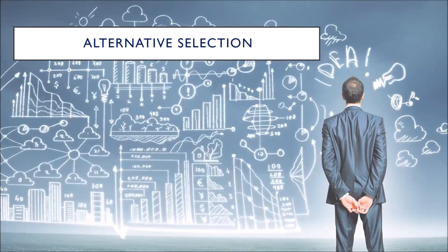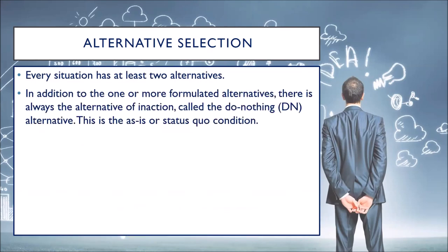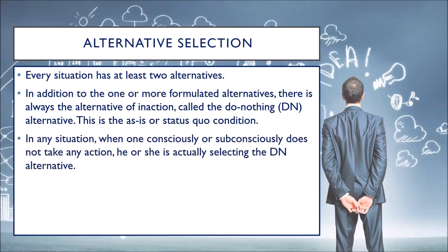Alternative Selection: every situation has at least two alternatives. In addition to one or more formulated alternatives, there is always the alternative of inaction, called the do-nothing or the DN alternative. This is the as-is or status quo condition. In any situation, when one consciously or subconsciously does not take any action, he or she is actually selecting the do-nothing alternative.